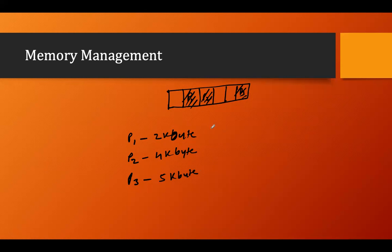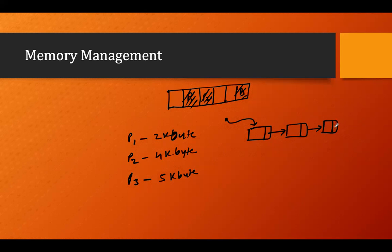Now, in non-contiguous memory allocation, consider a linked list as an analogy. A linked list has two parts: a data part and a pointer. The pointer points to the next node, and that's how the linked list is formed.